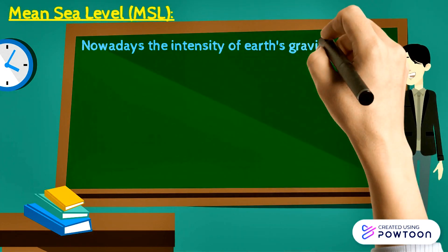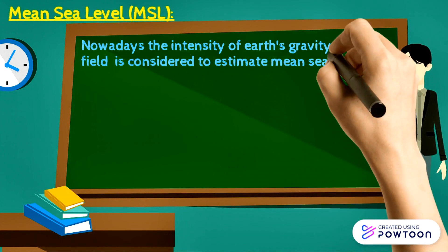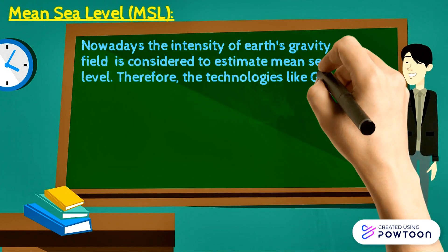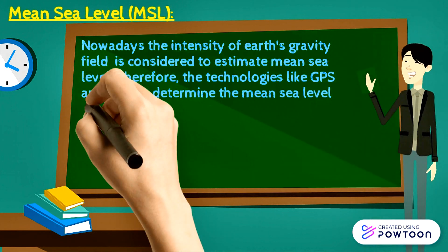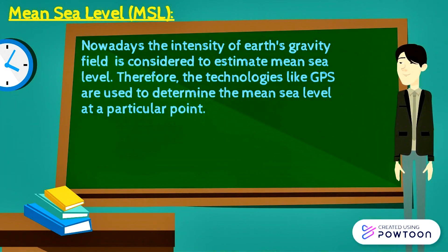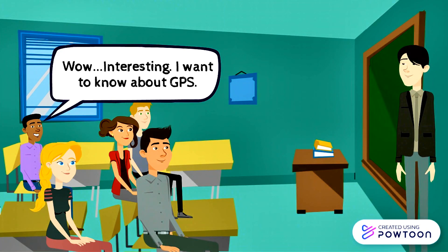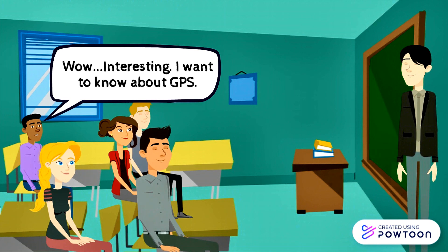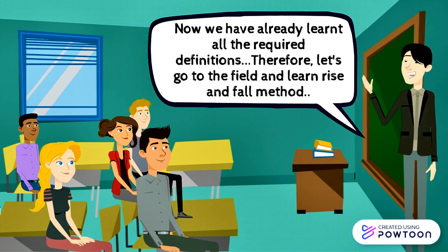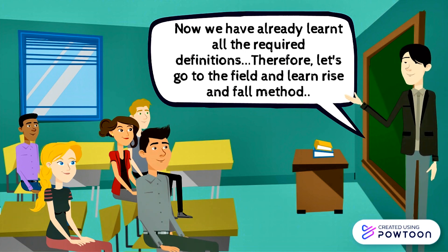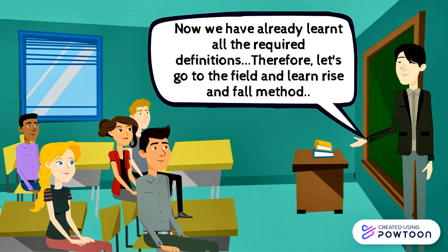Nowadays, the intensity of Earth's gravity field is considered to estimate the mean sea level. Therefore, technologies like GPS are used to determine the mean sea level at a particular point. Now we have already learned all the required definitions, so let's go to the field and learn the rise and fall method.